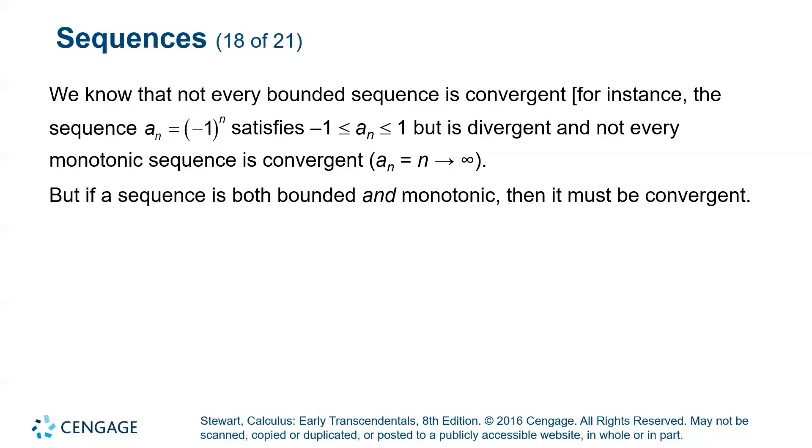Also, not every monotonic sequence is convergent. Remember, monotonic means either increasing or decreasing. However, what the last line says here is kind of cool. If a sequence is bounded and monotonic, then it has to be convergent.